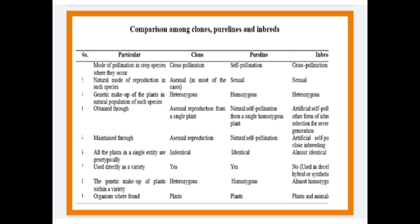Comparison among clones, pure lines, and inbreds: Mode of pollination — in clones, cross-pollination occurs; pure lines, self-pollination; inbreds, cross-pollination. Natural mode of reproduction — in clones, asexual; pure lines, sexual; inbreds, sexual. How the material is obtained — in clones, asexual reproduction from a single plant; pure lines, natural self-pollination from a single homozygous plant; inbreds, artificial self-pollination through selection for several generations.